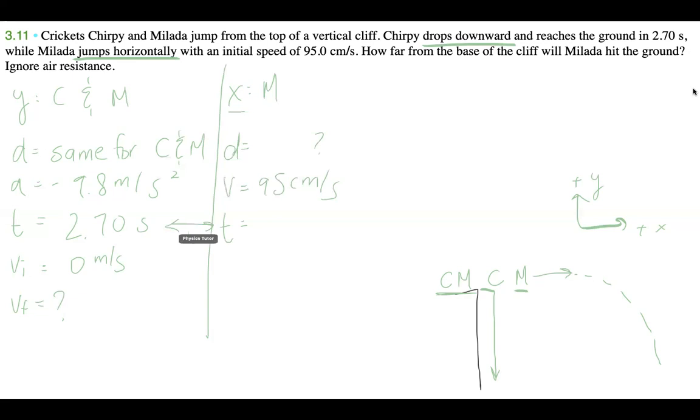The reason we know that is because something can only travel as far in the x direction as long as it is in the air. If it's in the air for 2.7 seconds, then that's how long it's traveling at this unwavering speed in the x direction. This is 2.70 seconds as well, because it's impossible that if something's in the air for one second, it travels horizontally for two seconds.